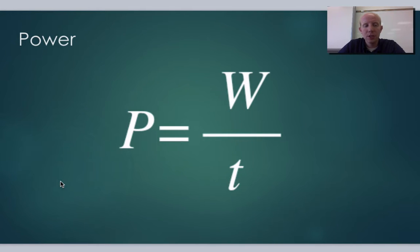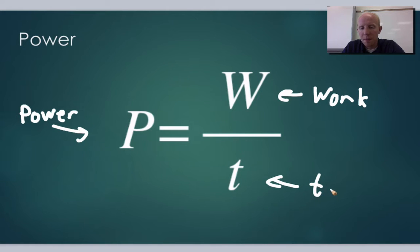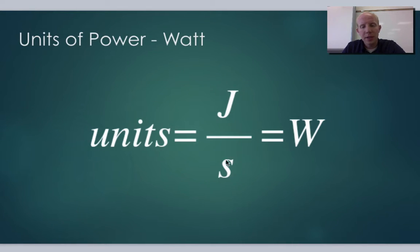So power is just work over time. Power, we'll use capital P. W, as we've seen before, is work. And little t is time. I put work here because that's the official definition, but you could easily put energy over time. They're kind of interchangeable depending on the context. Work and energy is measured in joules, and time is measured in seconds. So that would be joules per second.